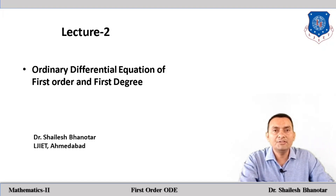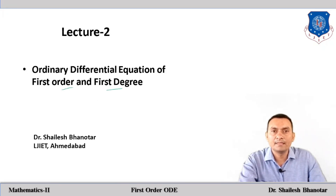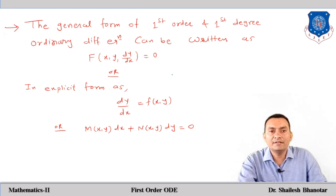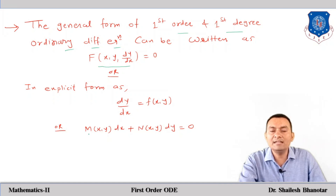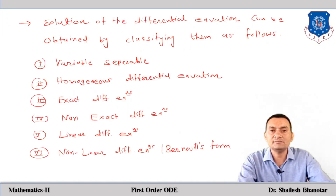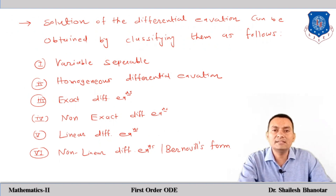Hello dear friends, in this video we will discuss the ordinary differential equation of first order and first degree. The general form can be written as f(x, y, dy/dx) = 0, where dy/dx has order 1. This can also be written in explicit form as dy/dx = f(x, y), or as M(x,y)dx + N(x,y)dy = 0. The solution can be obtained using various methods.